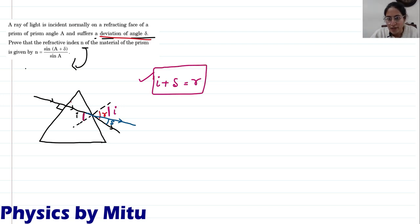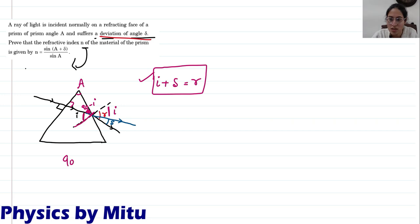This angle is 90 degrees, so this one will also be 90 degrees — vertically opposite. This is the angle of prism A given in the question. This angle will be 90 minus i, because the normal makes 90 degrees — if this is i, then this is 90 minus i. Now, using the angle sum property in this triangle: 90 + (90 − i) + i = 180. So, minus i plus a equals 0, therefore i is equal to A.